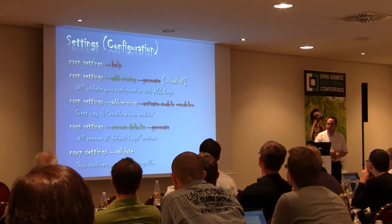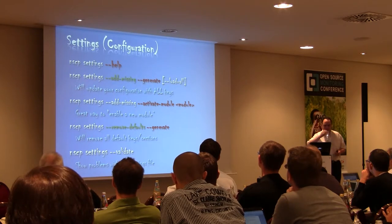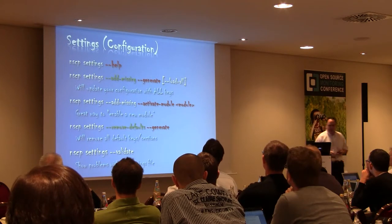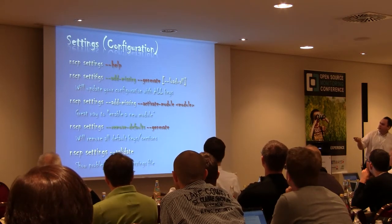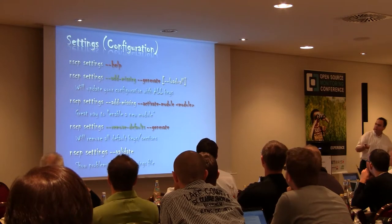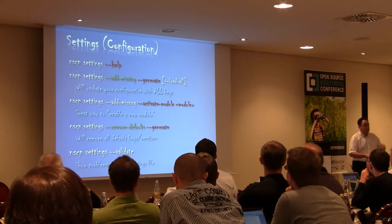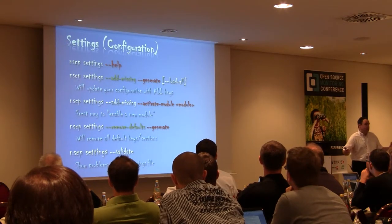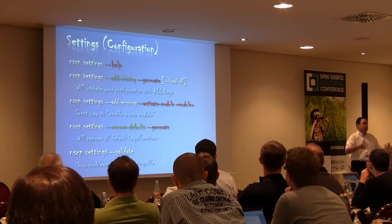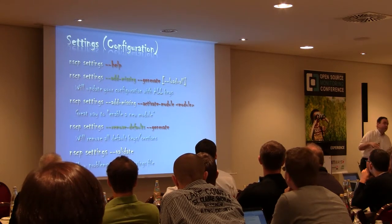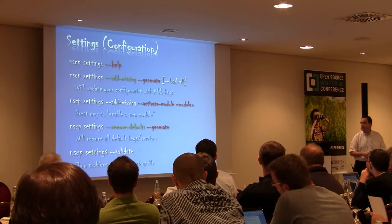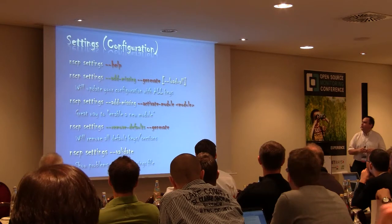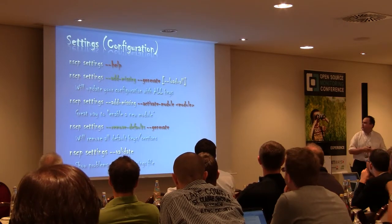Now for the settings demo. You can do a lot with settings. Most interestingly: 'add-missing and generate' will add all the keys you haven't set in your config file with their description and default value — a really nice way to figure out what you can configure. It creates a config file that's like 600-700 lines long if you bring everything in.